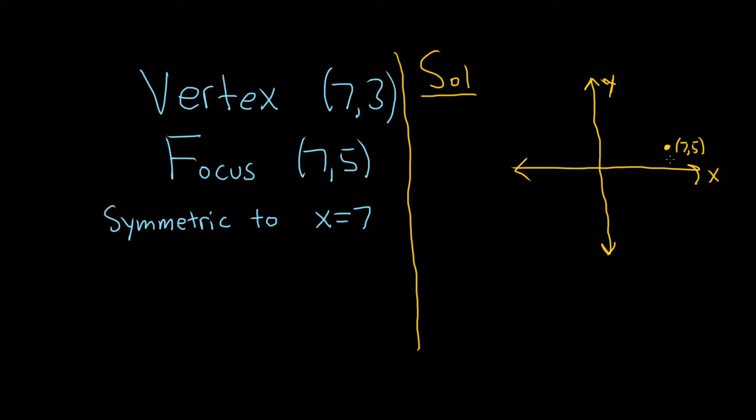And then (7,3), actually (7,3) is below it, so what I'll do is put the (7,5) here. There we go. I just want to have enough room for my (7,3), which is here. All right, so we have our vertex, which is (7,3), and our focus, which is (7,5).